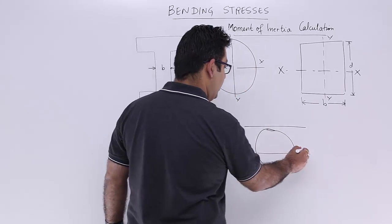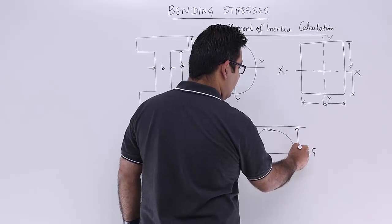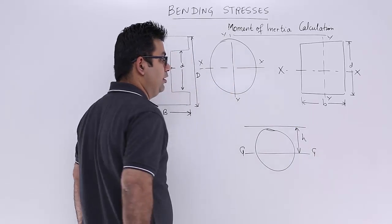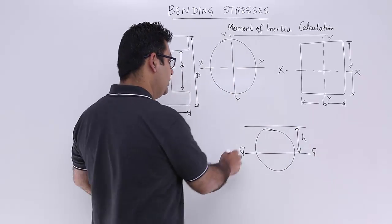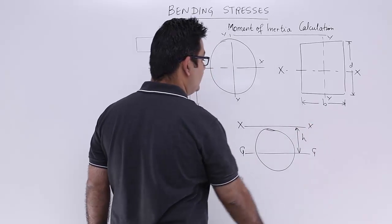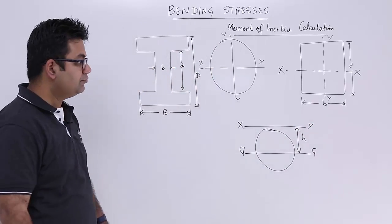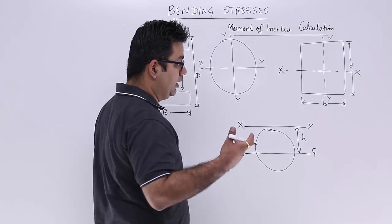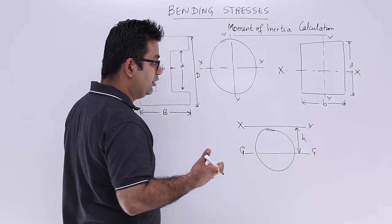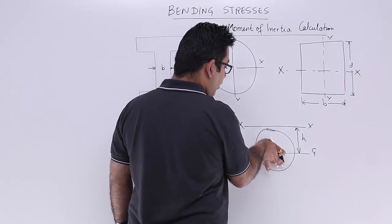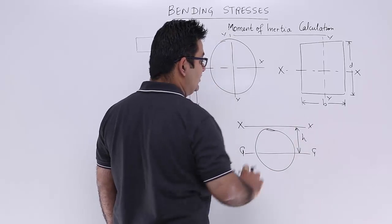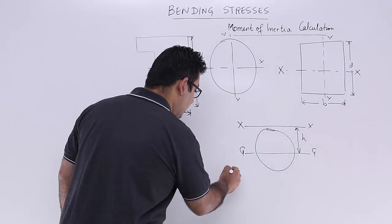So this is gg and the distance from the centroidal axis to this axis that is xx is h. If I have to find out the moment of inertia of this body about this axis that is xx, so I will write down Ixx.